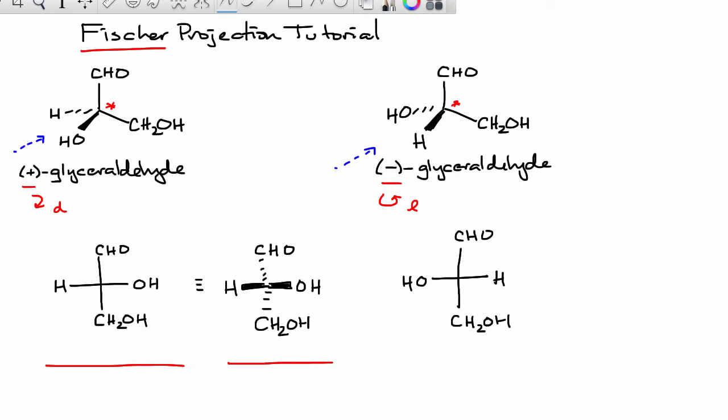Now it's easy for us to determine in the Fischer projection the relationship between these two molecules. If we draw a mirror plane highlighted in the blue dashed line here, we can see that the substituents on the chirality carbon mirror one another. We can easily say that those are enantiomers.